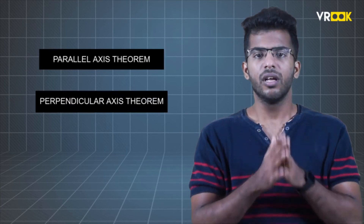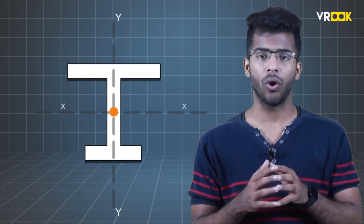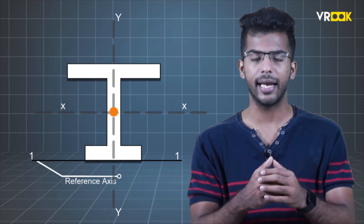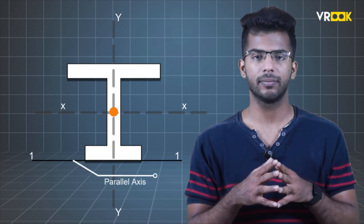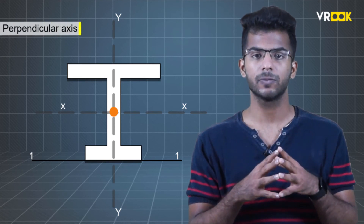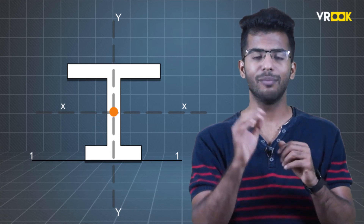Let us see the steps involved in calculating MOI, the moment of inertia. There are two important theorems which help us find the moment of inertia of a plane figure: the Parallel Axis Theorem and the Perpendicular Axis Theorem. If you consider any plane figure, there will be a centroid for this plane, and the axis passing through this centroid is known as the centroidal axis. If the reference axis is parallel to the centroidal axis, it is known as a Parallel Axis. If it is perpendicular, it is known as a Perpendicular Axis.